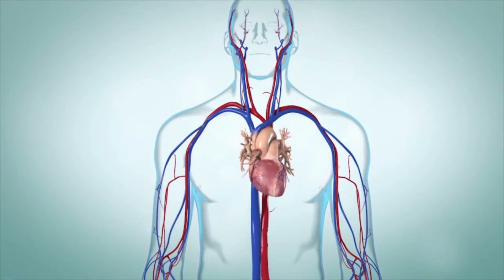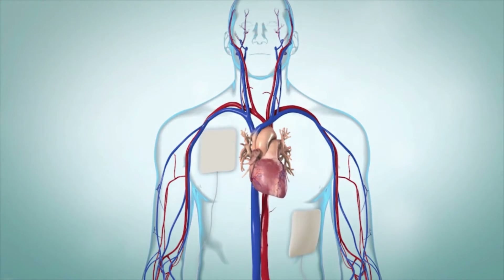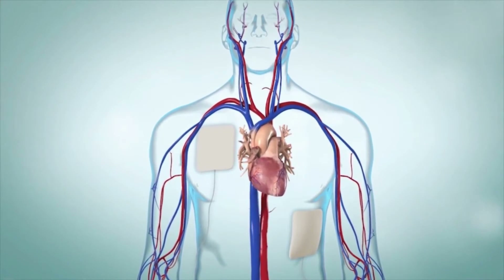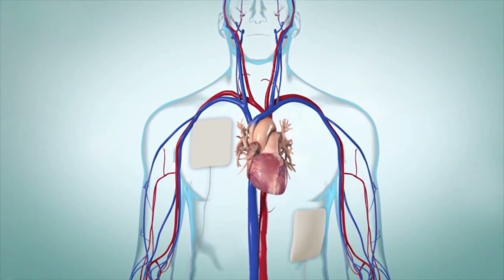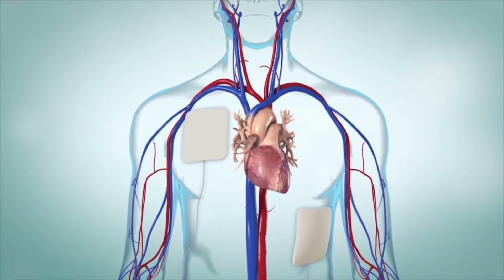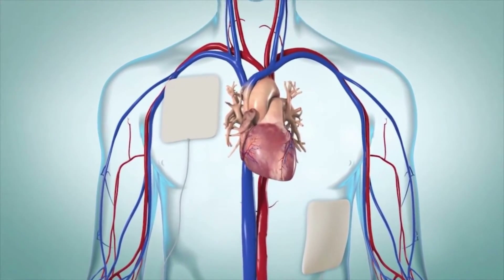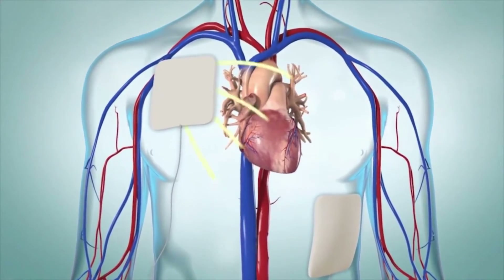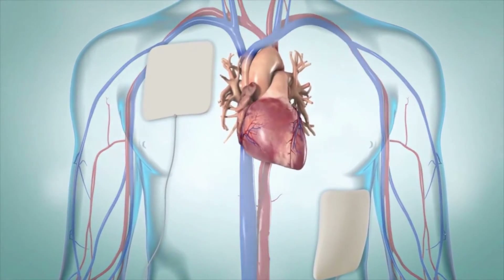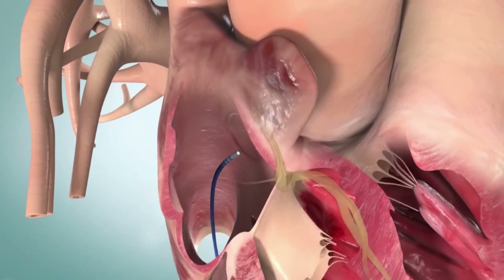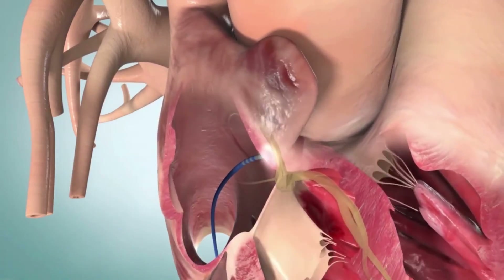Your healthcare provider may also try to restore your heart's normal rhythm using a procedure called electrical cardioversion. Cardioversion uses a short electrical shock to try to get your heart's rhythm back to normal. If medicine or cardioversion don't work, your healthcare provider may recommend other options.